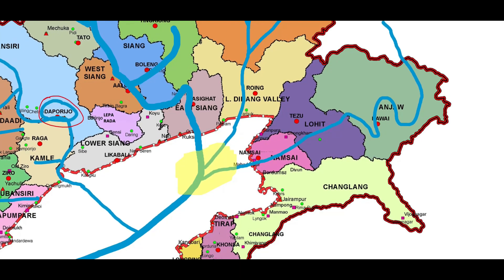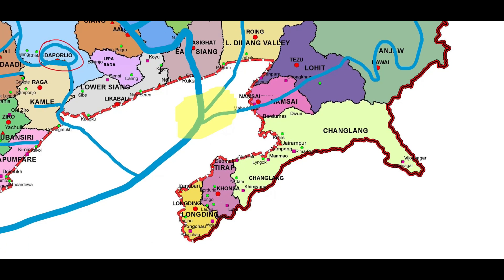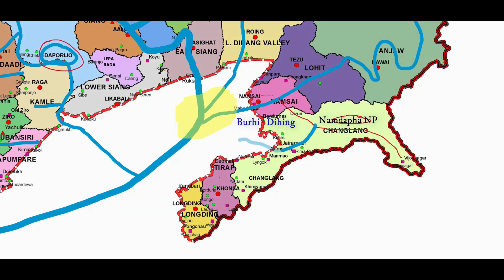Next, we talk about the southern districts of Changlang, Tirap, and Longding. Here is the Tirap river, and in the Changlang district lies the famous Namdapha National Park. Another prominent river, the Noa-Dehing, flows across the Changlang district and merges with the Lohit river. An offshoot of this river is the Buri Dihing, which travels through Tinsukia and Dibrugarh and joins the river Brahmaputra. The word Dihing means the big river. In this district, there is also the famous Kamlang Wildlife Sanctuary, which forms part of the southern Lohit and southern Anjaw district. The Kamlang river also joins the Lohit river.